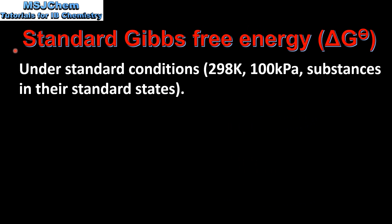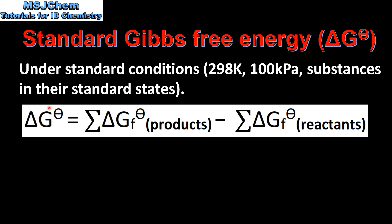Next we'll calculate the standard Gibbs free energy for a reaction. Because this is calculated under standard conditions we have a temperature of 298 K, a pressure of 100 kilopascals, and all substances are in their standard states. The standard Gibbs free energy of reaction equals the sum of the standard Gibbs free energy of formation values of the products minus the sum of the standard Gibbs free energy of formation values of the reactants.